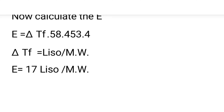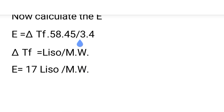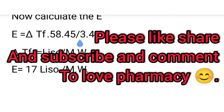So E is equal to delta Tf multiplied by Liso divided by molecular weight. Since 58.45 divided by 3.4 equals approximately 17, the final formula is: E equals 17 times Liso divided by gram molecular weight. This is the formula for calculating the sodium chloride equivalent weight of any drug. Please like, share, subscribe, and comment if you have any doubts.